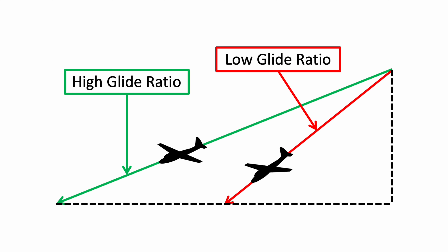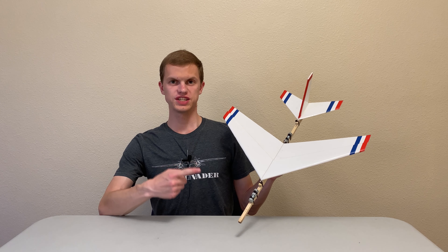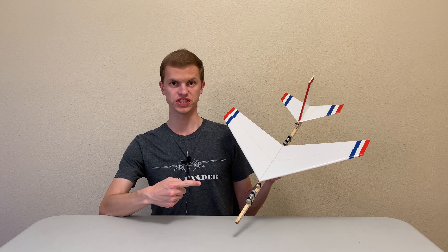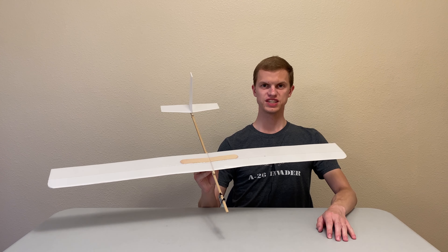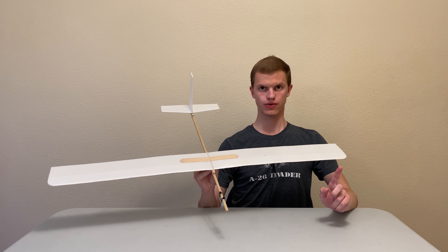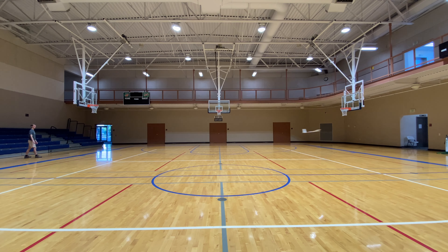Another way to make a glider fly further is to increase its glide ratio, so it flies further for every increment of altitude lost. Here you can see that both gliders are launched from the same height, but the one with a high glide ratio, shown in green, travels further than the one with a low glide ratio, shown in red. This is demonstrated with examples of a low glide ratio glider that doesn't fly very far, and a high glide ratio glider that flies a lot further.